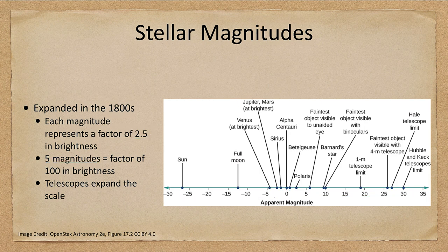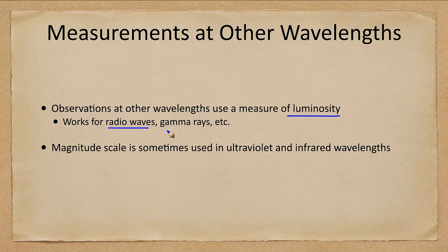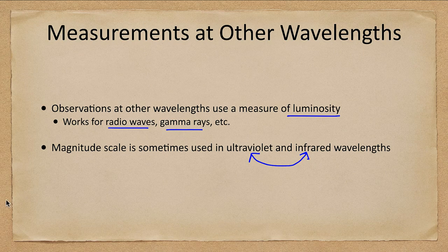How about other wavelengths? This magnitude discussion is about visible light. Observations at other wavelengths tend to use luminosity instead — so radio astronomers and gamma-ray astronomers use luminosities and not magnitudes — although some infrared and ultraviolet observations also use magnitudes to measure the brightness of stars.